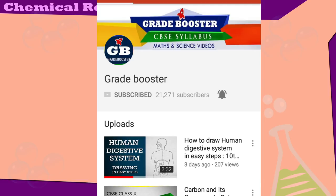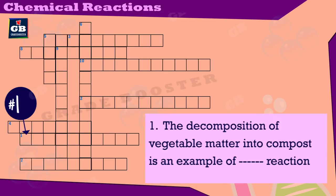The decomposition of vegetable matter into compost is an example of what type of reaction? Subjee ka kachra decomposition dwara compost ban jati hai — yeh kis prakar ki reaction hai? Answer: exothermic.